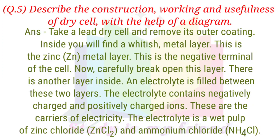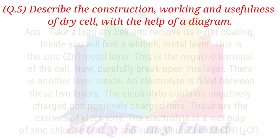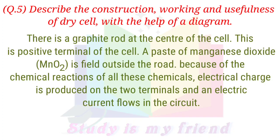This is the negative terminal of the cell. Now carefully break open this layer. There is another layer inside and electrolyte is felt between these two layers. The electrolyte contains negatively charged and positively charged ions. These are the carriers of electricity. The electrolyte is a wet pulp of zinc chloride and aluminum chloride. There is a graphite rod at the center of the cell. This is the positive terminal of the cell. A paste of manganese dioxide is felt outside the rod.